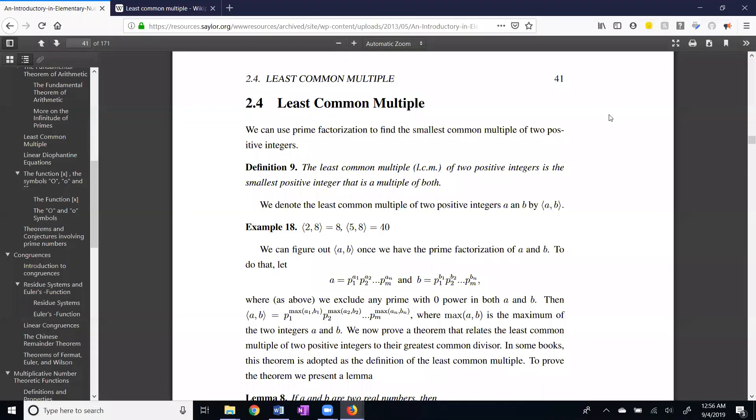Looking at our textbook, we're in section 2.4. The definition: the least common multiple of two positive integers is the smallest positive integer that is a multiple of both.